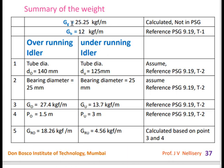Summary of weights: gg = 25.25 kgf/m, gb = 12 kgf/m. Overrunning idler: tube diameter 140 mm, bore 25 mm, assembly weight go = 27.4 kgf, spacing po = 1.5 m, gro = 18.26 kgf/m. Underrunning idler: tube diameter 125 mm, bore 25 mm, assembly weight gu = 13.7 kgf, spacing pu = 3 m, gru = 4.56 kgf/m.